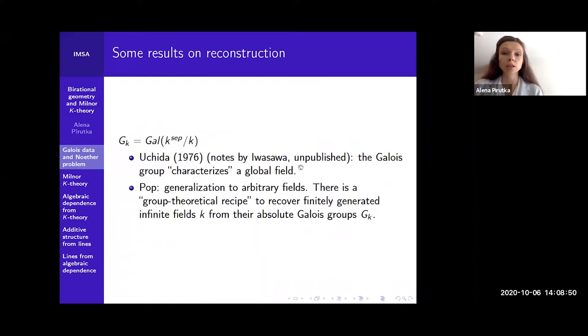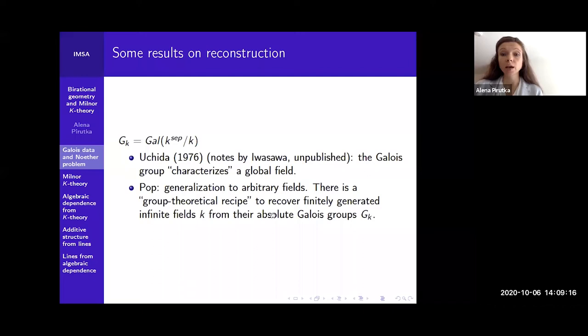More generally, Uchida showed that for global fields, the entire Galois group characterizes the global field. And Pop generalizes this to arbitrary fields. There is a group theoretical recipe to recover finitely generated infinite fields from their entire absolute Galois group GK. Now I would like to discuss what can be reconstructed not from the entire Galois group GK, but from some partial information, since GK is often too large and difficult to understand.